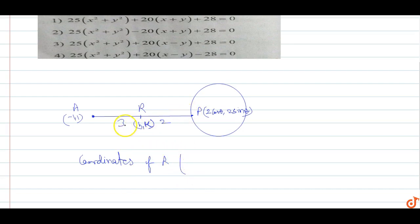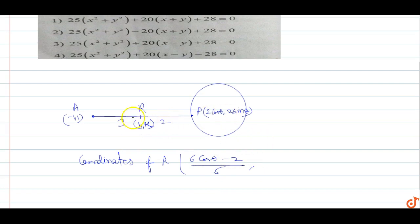Using the section formula: h = (m₁·x₂ + m₂·x₁) / (m₁ + m₂) = (3·2cosθ + 2·(−1)) / (3 + 2) = (6cosθ − 2) / 5. And k = (m₁·y₂ + m₂·y₁) / (m₁ + m₂) = (3·2sinθ + 2·1) / 5 = (6sinθ + 2) / 5.